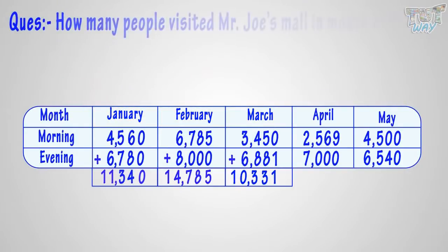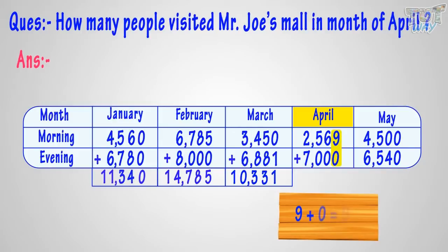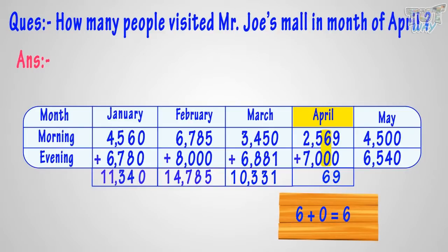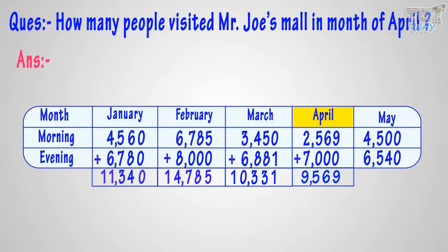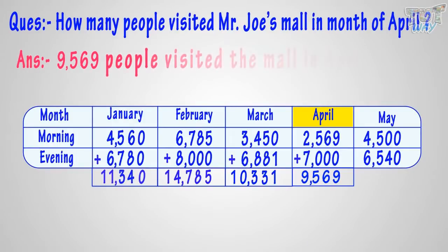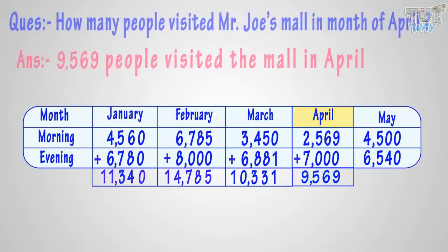Here we will add up the morning and evening visitors for April. Adding 9 and 0, we get 9 — write it at the 1's place. Adding 6 and 0, we get 6 — write 6 at the 10's place. Adding 5 and 0, we get 5 — write 5 at the 100's place. Adding 2 and 7, we get 9 — write 9 at the 1000's place. We get 9,569. So 9,569 people visited the mall in April.